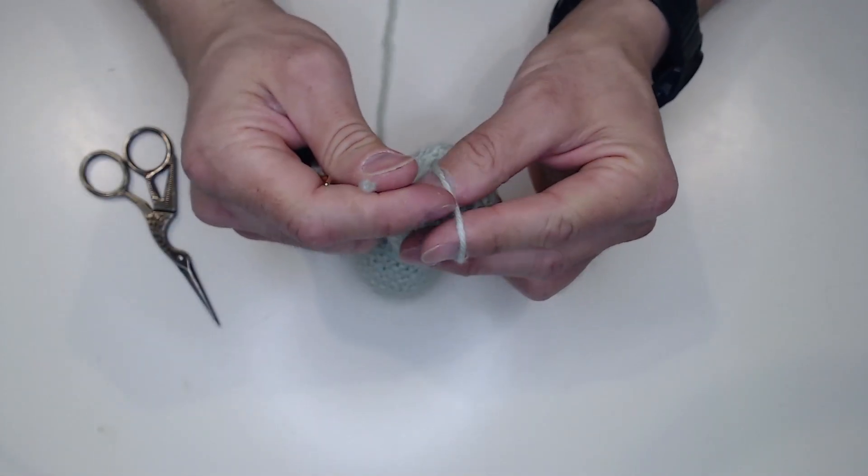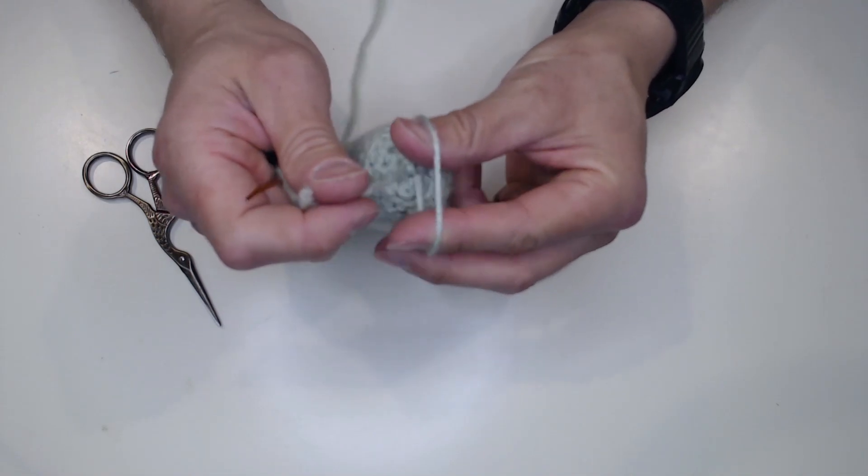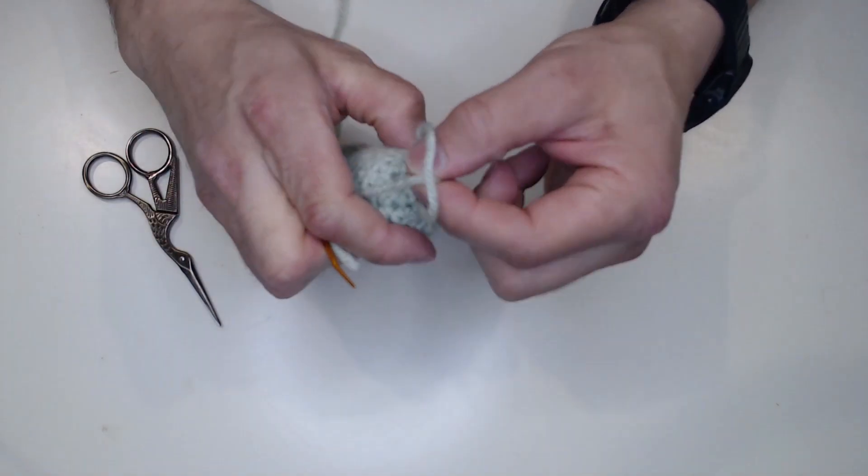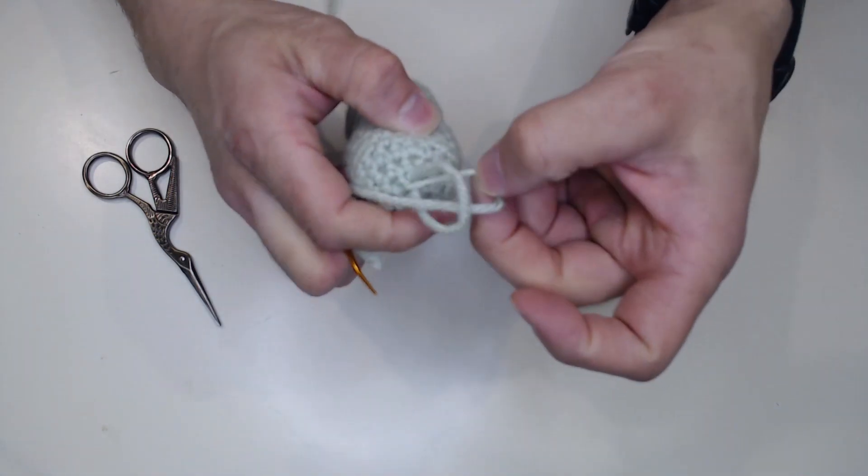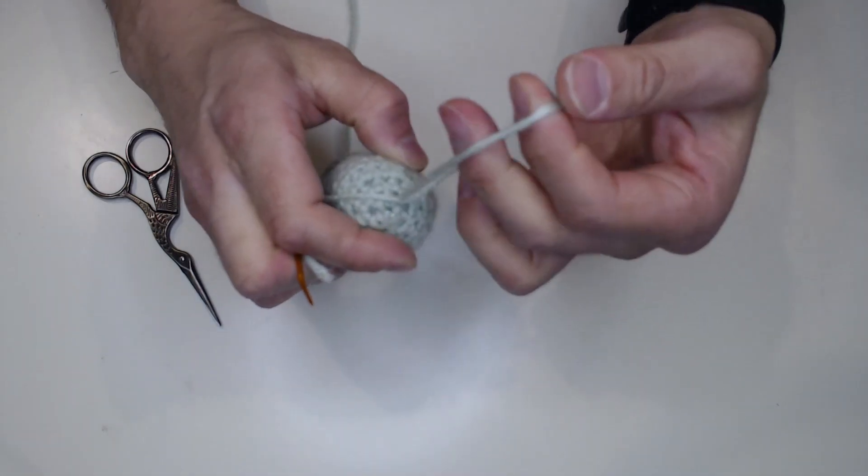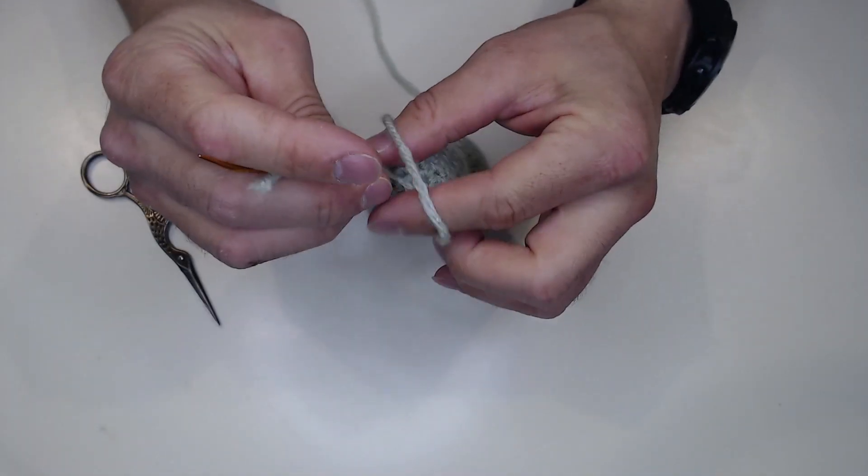And what you do is you pull it through, and then the bottom part will actually cinch down a knot. And that's one, and you do it again. So you have a loop, you grab the bottom part here, the bottom part that's attached to the yarn, and you pull it through again.